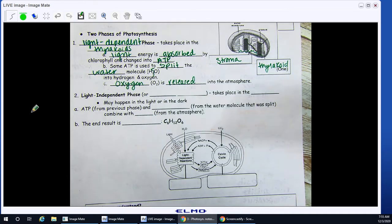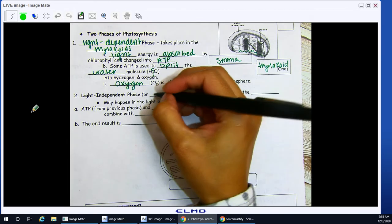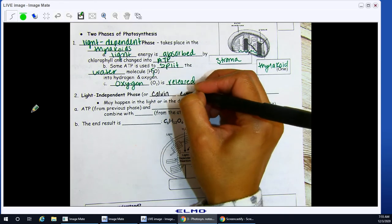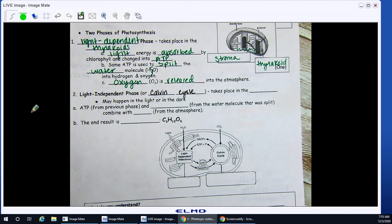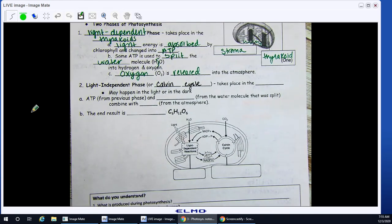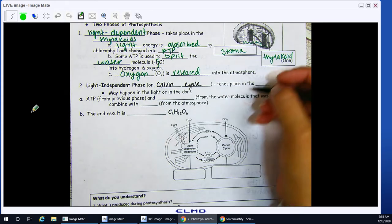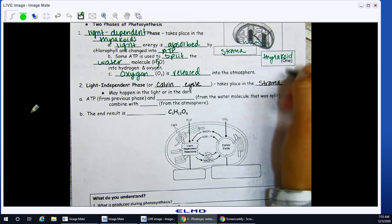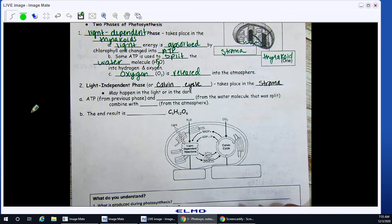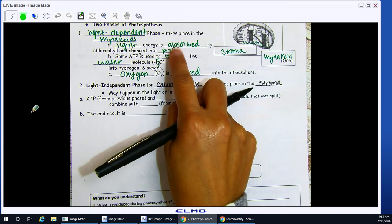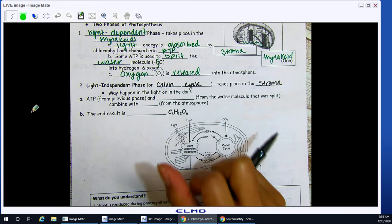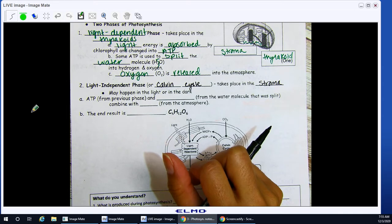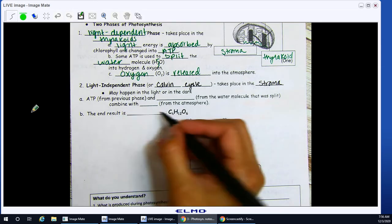Number two, light-independent phase. This is also known as the Calvin cycle. Light-independent. So, this means, with the absence of light, it does not depend on light. This takes place in the stroma. That is that watery space inside your chloroplast. It can happen in the light or in the dark. ATP from previous phase. So, ATP that I've made from the light-dependent phase. And hydrogen from the water molecule that was split. Combine with carbon dioxide from your atmosphere.